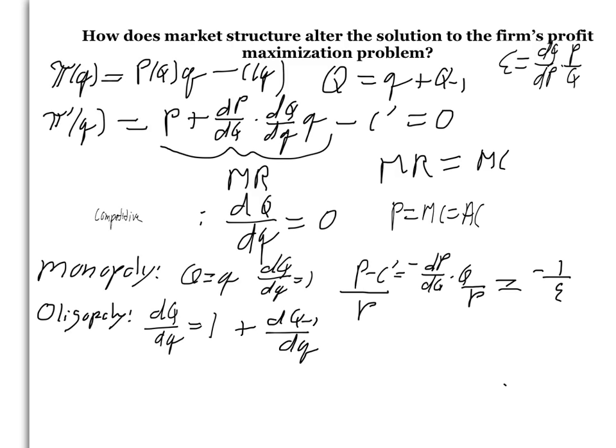I want to see how this strategic response alters the price cost margin we derived for the monopoly case. Now, the wedge between price and marginal cost is equal to the slope of the demand curve, the negative of the slope of the demand curve times the response of industry output to the firm's strategic choice. I can divide both sides by p to get the price cost margin. I want the term before the parentheses to be the inverse elasticity of demand, which it will be if I put big Q in the numerator.